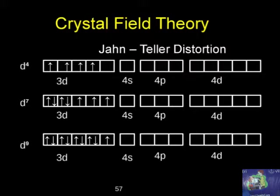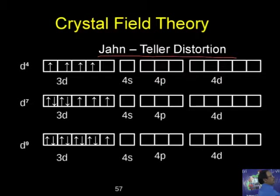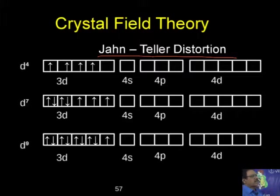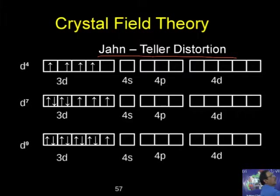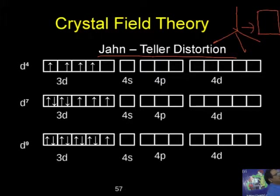All your teachers may be giving the wrong answer here. The reason is due to Jahn-Teller distortion. Even though the hybridization is sp3, in the case of Cu(II) sulfate tetrahedral complex, due to Jahn-Teller distortion, the shape changes to square planar. The original shape is distorted and becomes square planar.